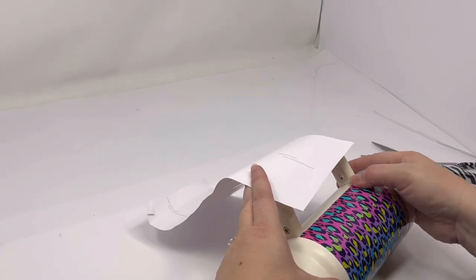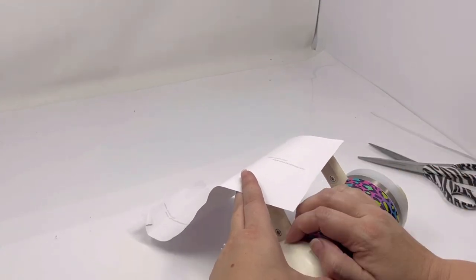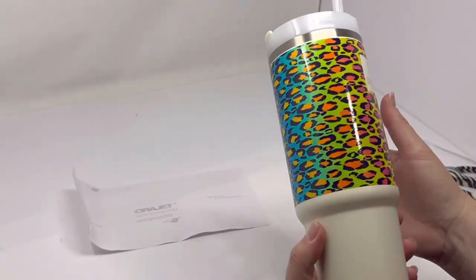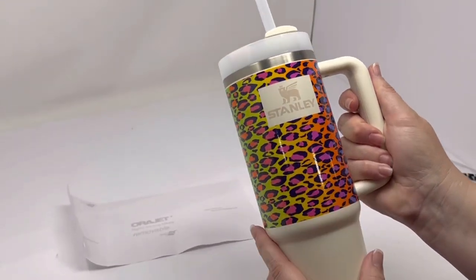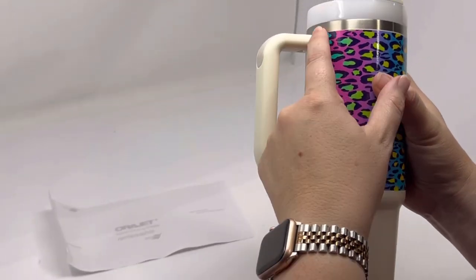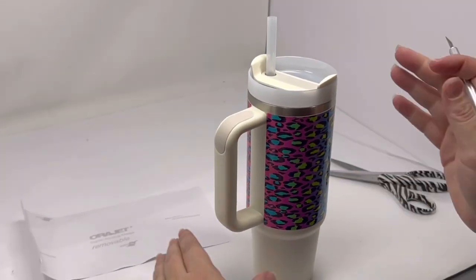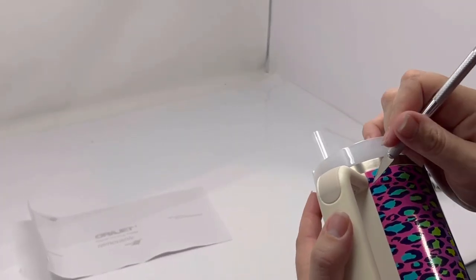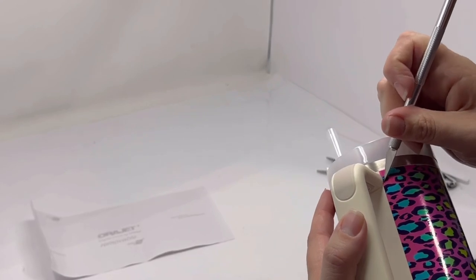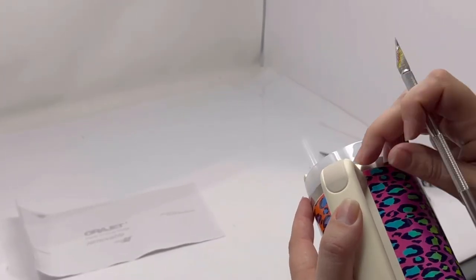And I'm a little off here. All right, so that's what it looks like. Now if you look here, I'm a little off on the handle. All you need to do is just take a little exacto knife and just trim that little edge piece right there off.